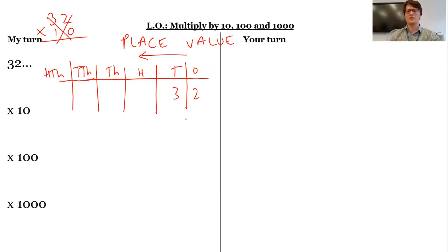So when I'm timesing by 10, remember that when you times by 10, the digits move one column to the left. They become 10 times bigger. 10 tens is the same as 100, so they move over here. So this digit 3 is going to become 300s.